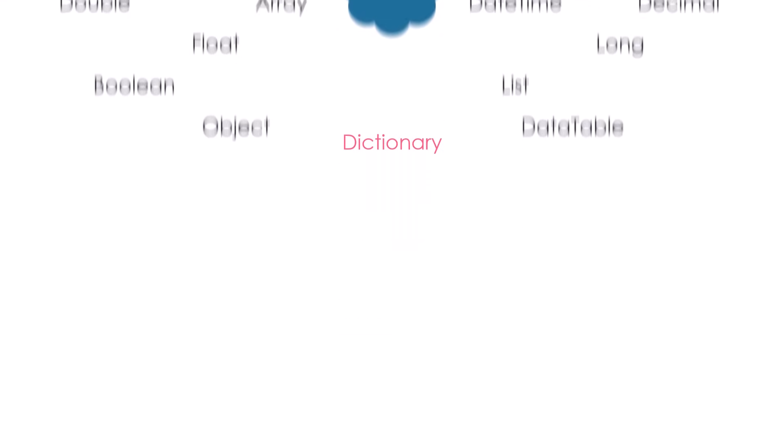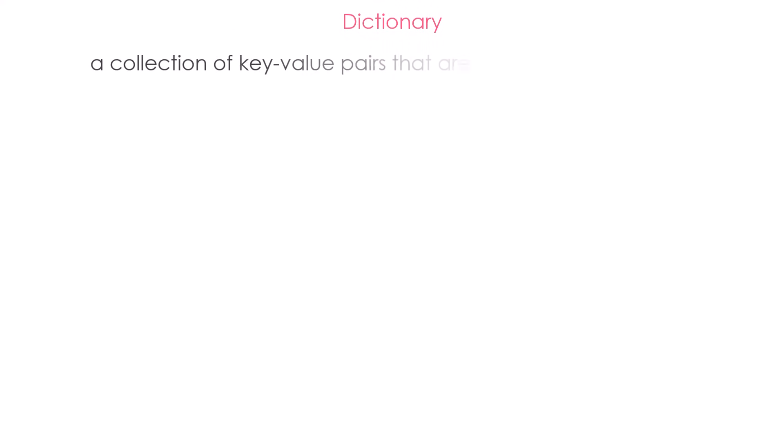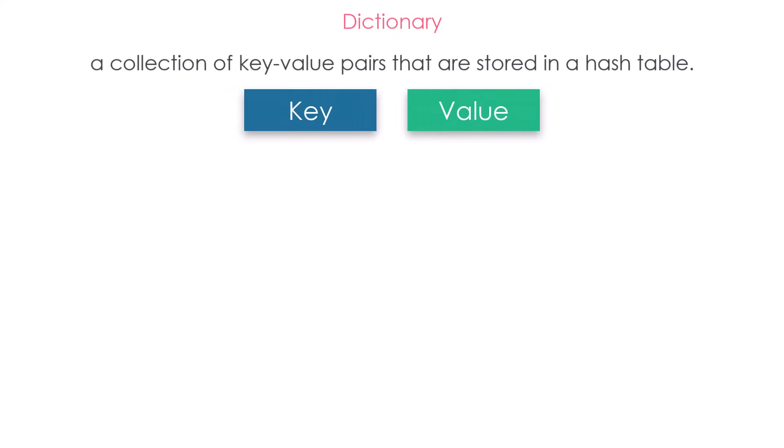What does a dictionary type mean? A dictionary is a collection of key-value pairs that are stored in a hash table. They are often used to store data that is connected in some way, but doesn't need to be stored in a particular order. Each piece of data in a dictionary is stored as a key-value pair. The key is a unique identifier for the piece of data, and the value is the data itself. I should know the key inside the dictionary in order to get the value — the key is the identifier for the value I want to get.